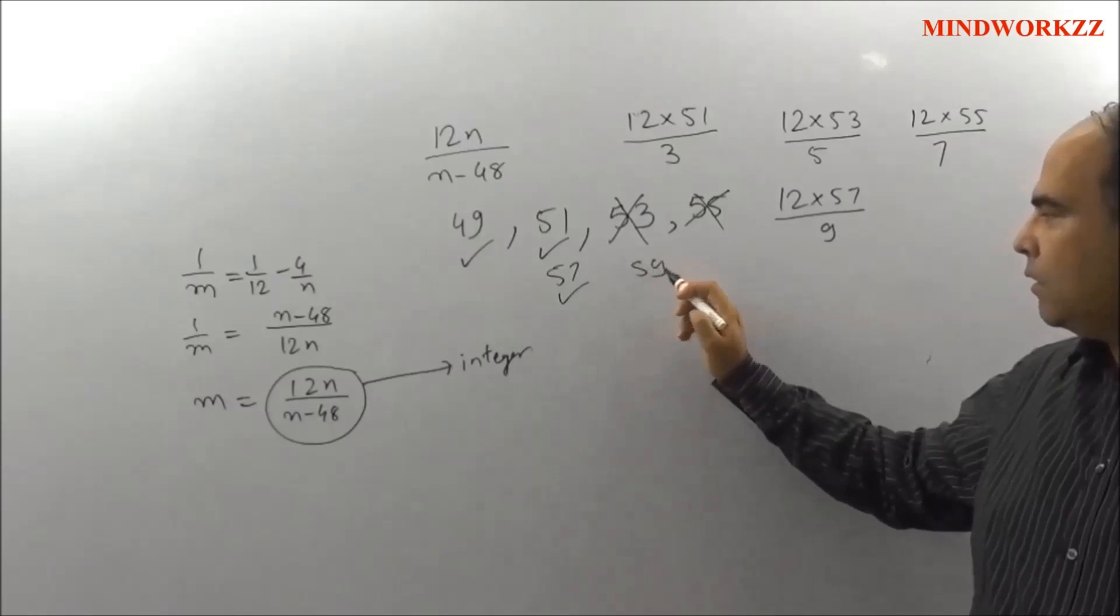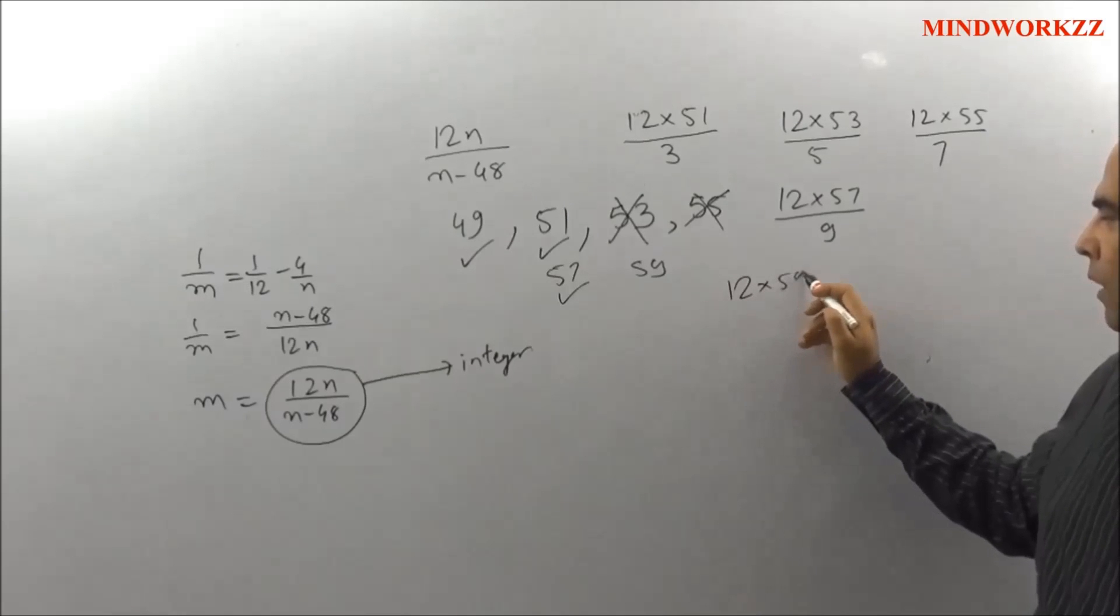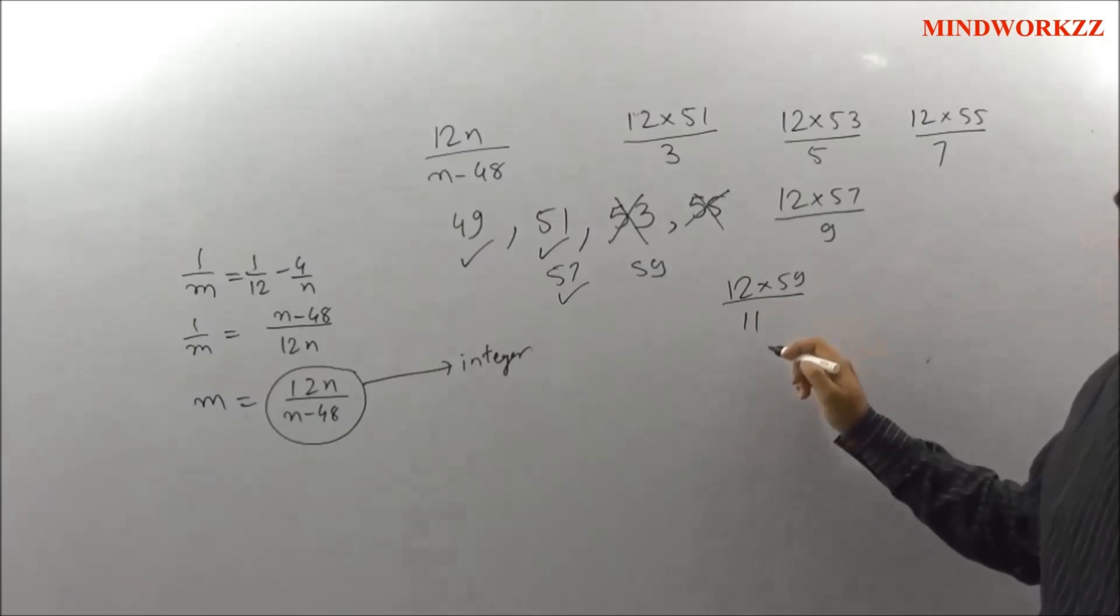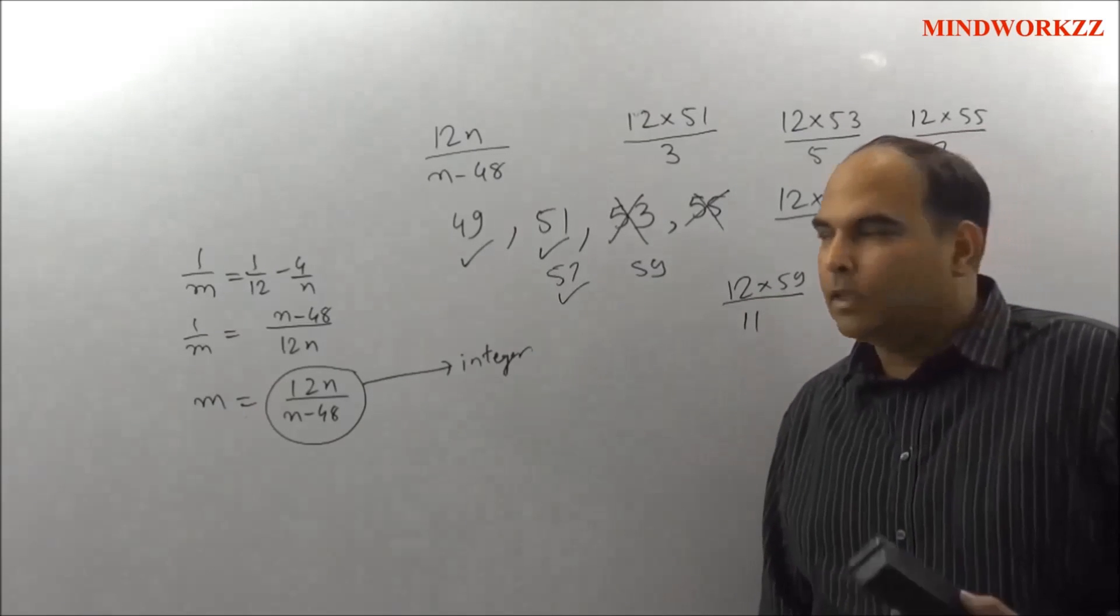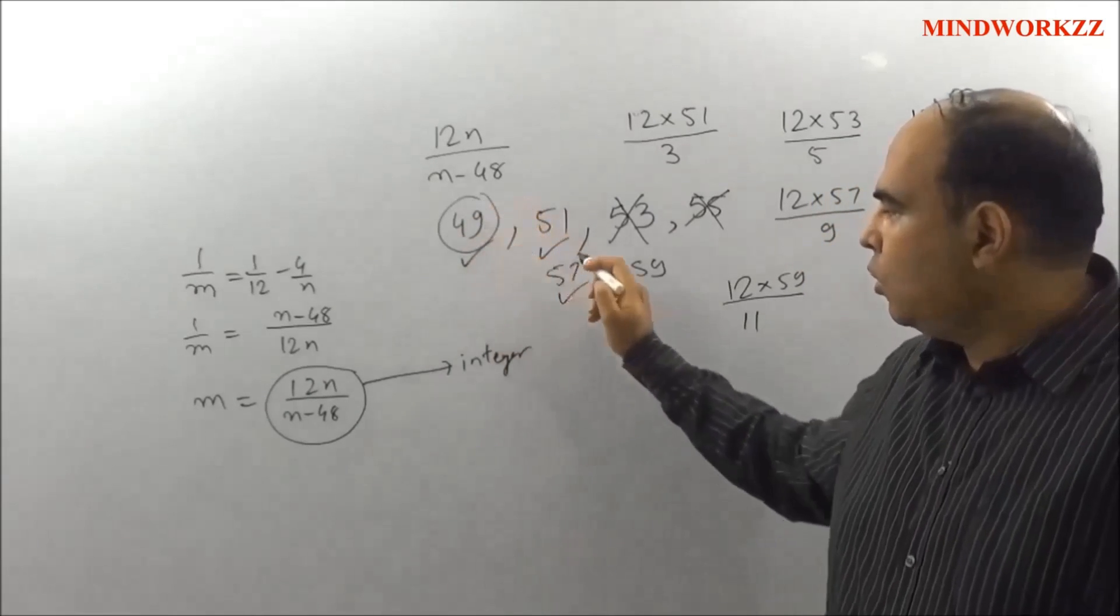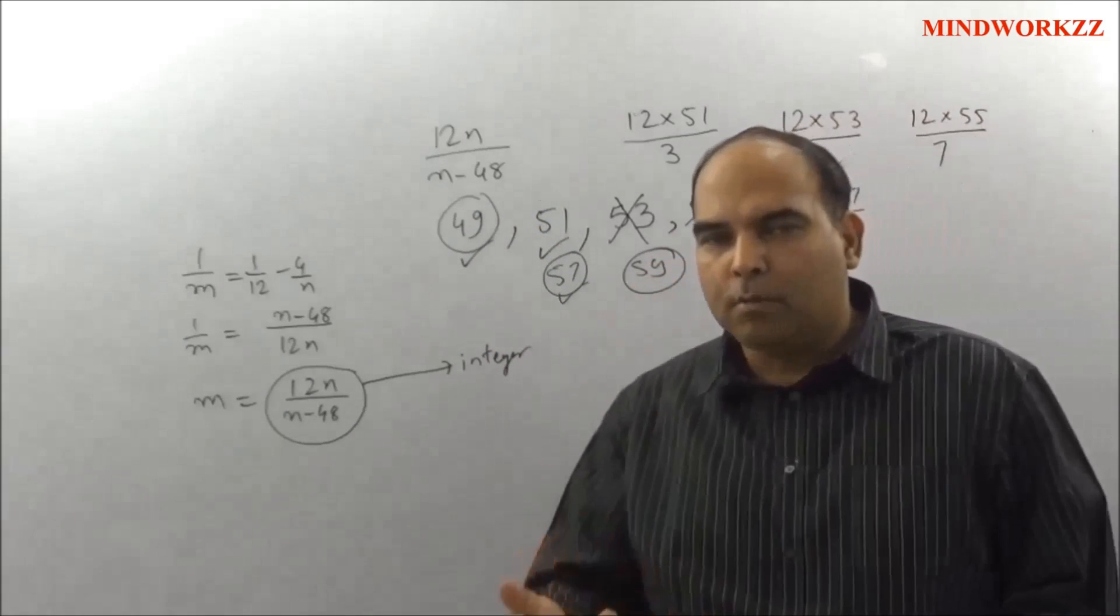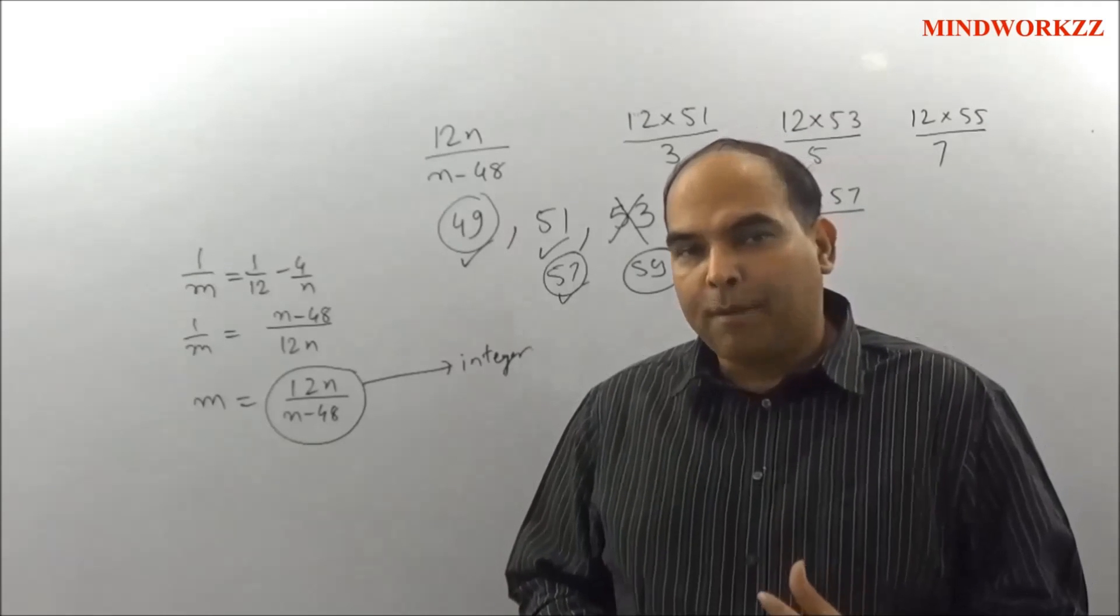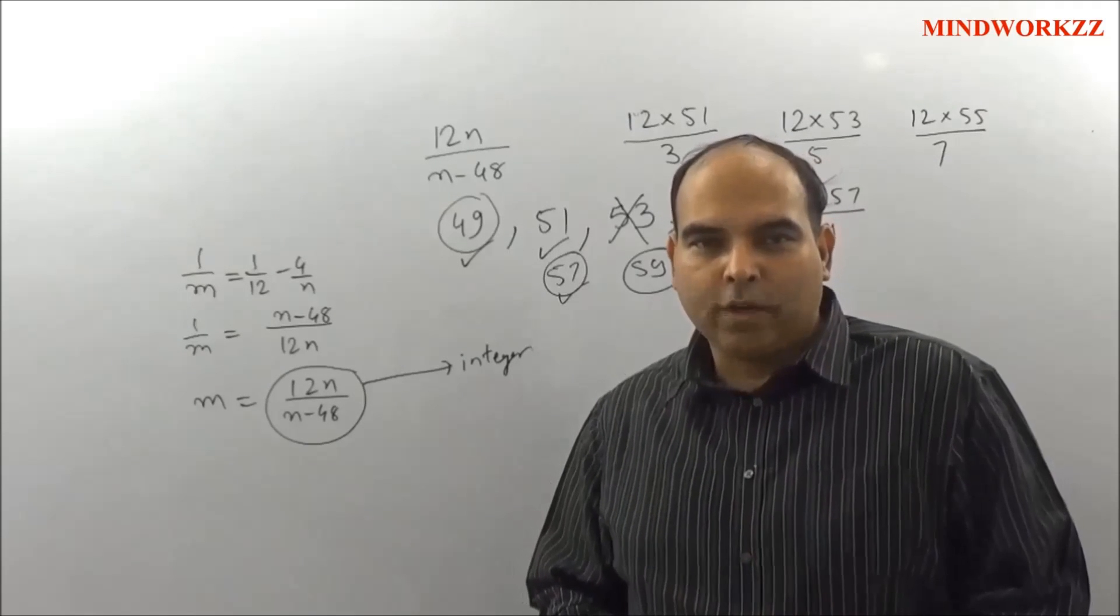And if you check 59, 12 × 59 / 11, the 11 does not get cancelled, and hence you have 3 cases or 3 possible values of n which will give you a possible value of m. Hence the number of pairs of mn values is 3 in this question.